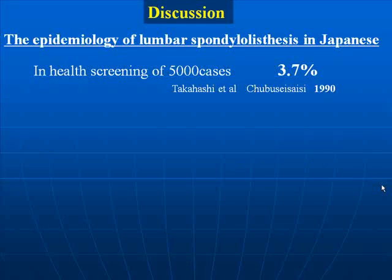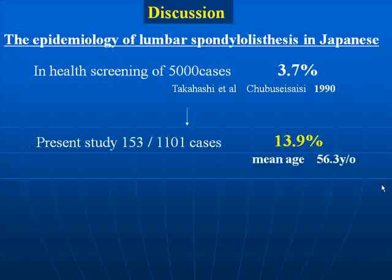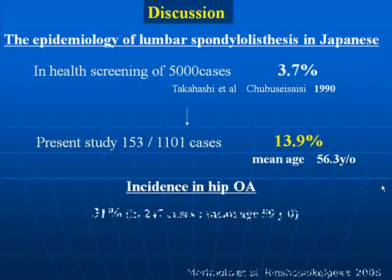With regard to degenerative spondylolisthesis, Takahashi and others reported an incidence of 3.7% using lumbar spine two-directional radiography, compared to which the rate of 13.9% reported by us here is high. Regarding the incidence of degenerative spondylolisthesis in hip OA, Morimoto and others have reported a rate of 31%. These are extremely high rates, and since the mean age in our study was similar to theirs, no explanation for this difference immediately comes to mind.